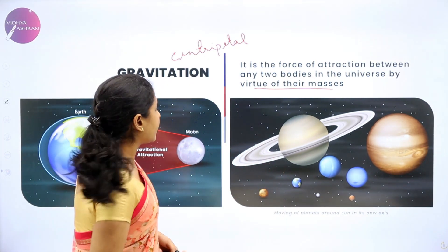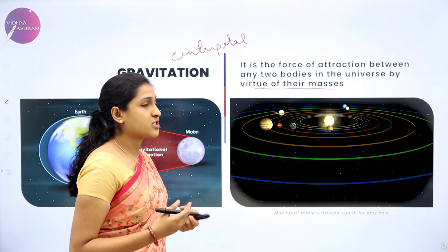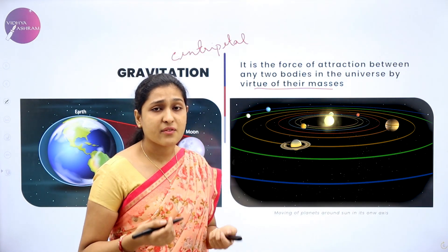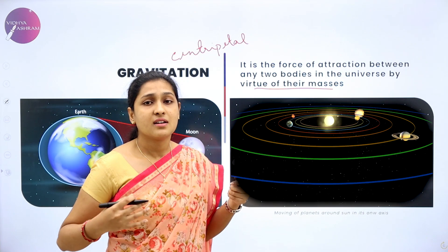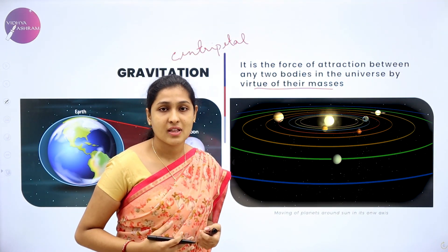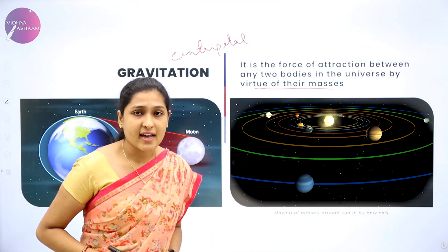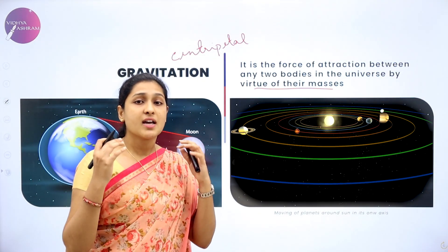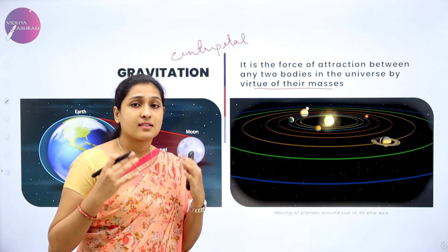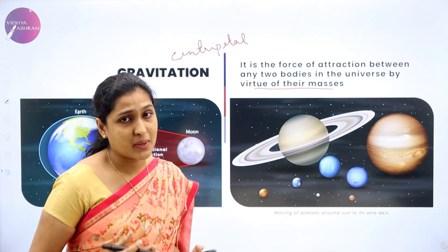In the second image, you can see there are many planets like Jupiter, Saturn, and Earth — they are revolving around the sun. Why? It is because of the same concept: it is because of the gravitational force along with the centripetal force.